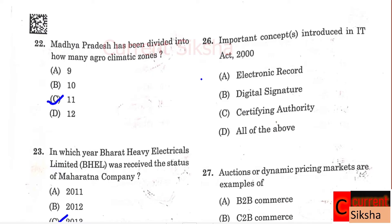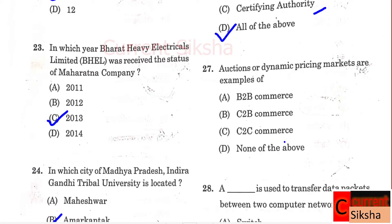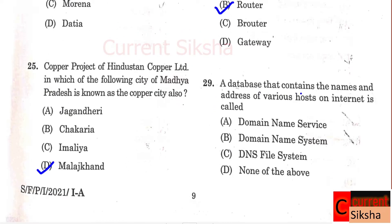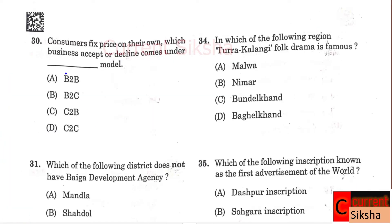Question 26: Important concepts introduced in IT Act 2000? Correct option D - All of the above: electronic record, digital signature, and certifying authority. Question 27: Auctions or dynamic pricing markets are examples of? Correct option D - None of the above. Question 28: A dash is used to transfer data packets between two computers' network. Correct option B - Router. Question 29: A database that contains names and addresses of various hosts on the internet is called? Correct option B - Domain Name System. Question 30: Consumers fix price on their own - which business model can accept or decline? Correct option C - Consumer to Business (C2B).